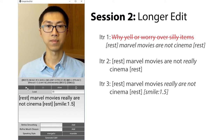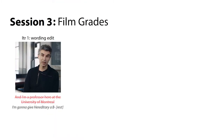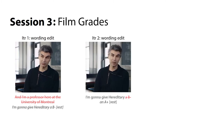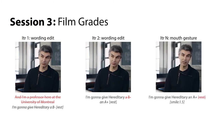'Marvel movies really are not cinema.' Here we have the actor test different grades for the film Hereditary: 'I'm gonna give Hereditary a B-.' The grade is too low, so we change the grade to A+: 'I'm gonna give Hereditary an A+.' Happy about the grade, we add a smile at the end: 'I'm gonna give Hereditary an A+'.